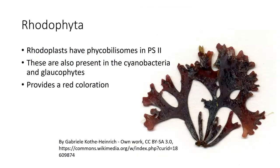Rhodophyta have rhodoplasts that contain phycobilisomes in photosystem II. These phycobilisomes are also found in cyanobacteria and glaucophytes, but they are not found in the higher green plants — showing that they are related back to those earlier groups. This is what gives them the red color.